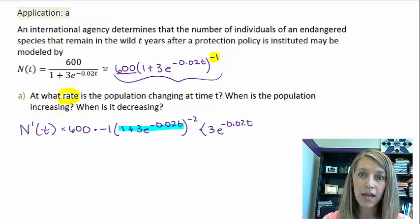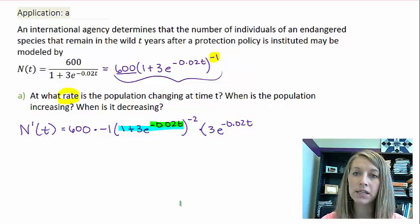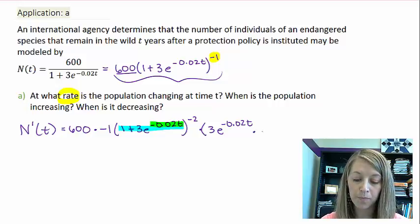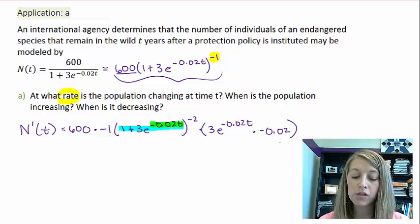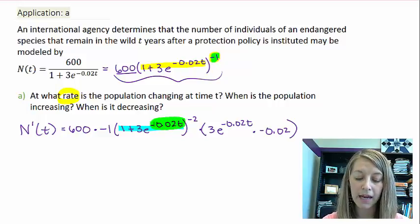But then I actually had a separate chain rule inside that. So now I need to take the derivative of the inside of this one. So it is negative 0.02. So there are two chain rules. The first one is my inside here with this power. And then the second one was my inside of the e.